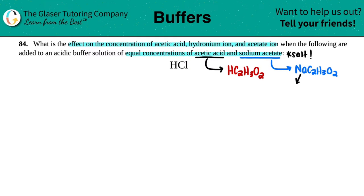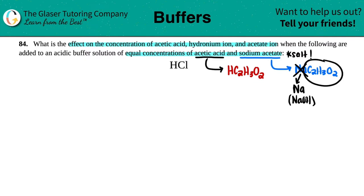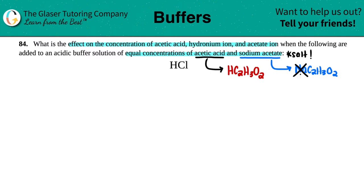Since sodium comes from NaOH, and NaOH is one of the six strong bases, the conjugate — which is just the sodium — is so, so weak that it's basically classified as neutral. So in this case, I don't care about the sodium. The only thing I care about is the acetate ion. That's why they only ask for what's going on with the acetate ion.